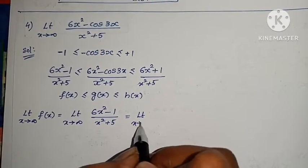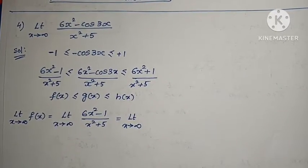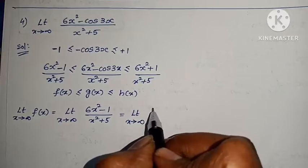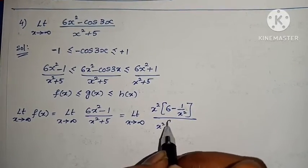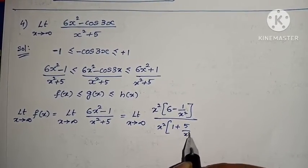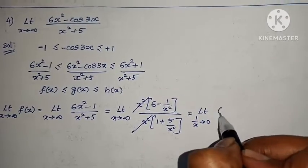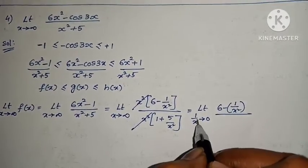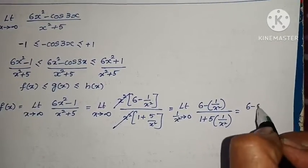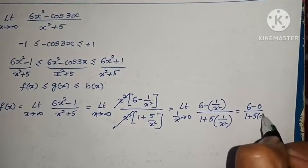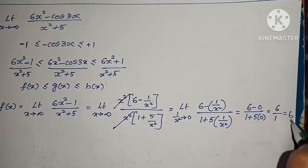As x tends to infinity, 1/x tends to 0 and 1/x² tends to 0. So limit of (6 - 1/x²)/(1 + 5/x²) = (6 - 0)/(1 + 5·0) = 6/1 = 6. The answer for f(x) limit is 6.